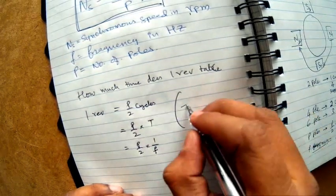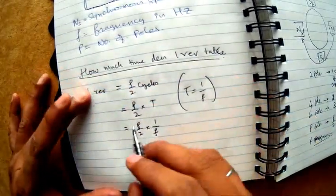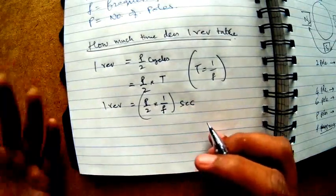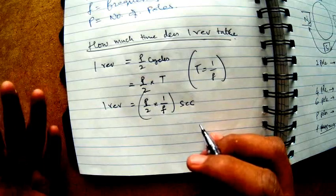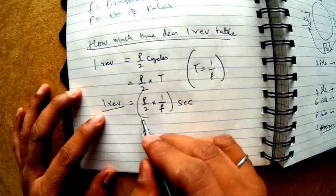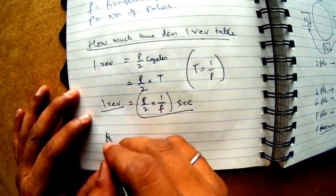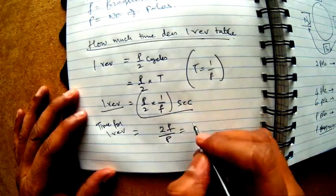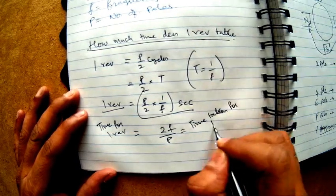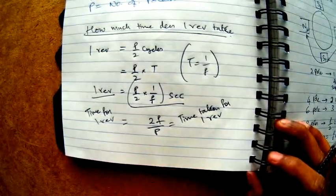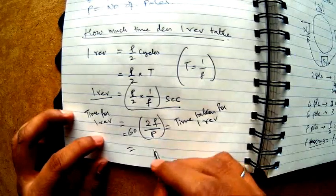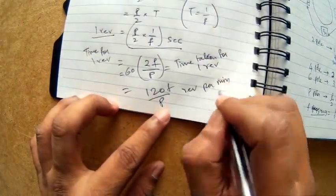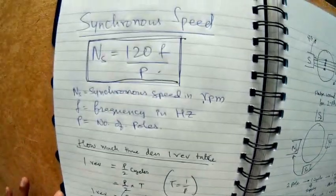How many revolutions will happen in 60 seconds? What is the time for one revolution? It is the inverse of this: 2f by P is the time taken for one revolution. How many revolutions occur in 60 seconds? Simply multiply by 60, so we get 120f by P revolutions per minute. This is our RPM, denoted as NS. So that is the derivation.